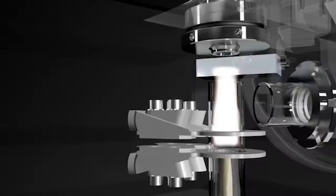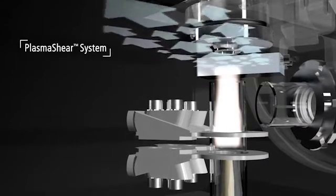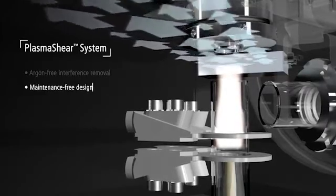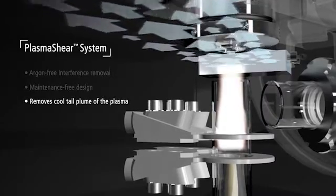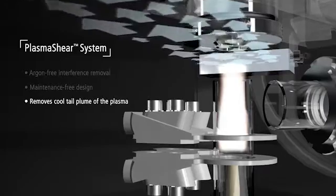To address any analytical distortion, Perkin Elmer developed Plasma Shear, which draws on readily available, inexpensive compressed air. To prevent interferences and sample deposition on the optical interface, Plasma Shear eliminates the tail plume from the optical path, which allows maximum light transfer into the spectrometer.